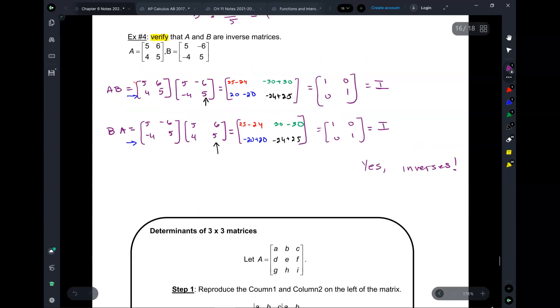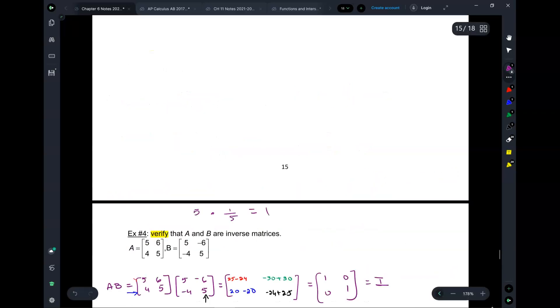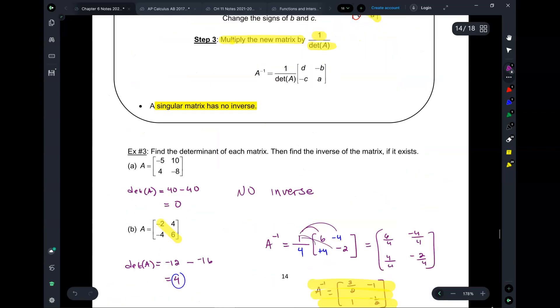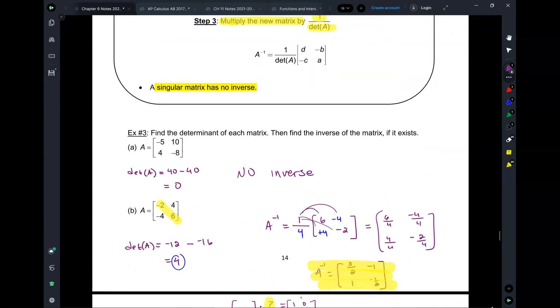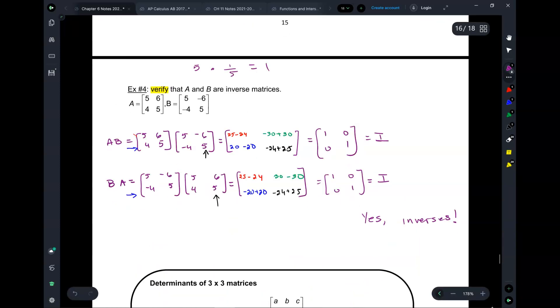This is the only situation where A times B and B times A will give you the same product, and that product has to be the identity matrix. A lot of students when they see this question ask, can I just take one matrix, find the inverse, and show that it's the same as the other one? The answer is no, because we have to stick to mathematical protocols. If it says verify, you've got to do it using the theorem.